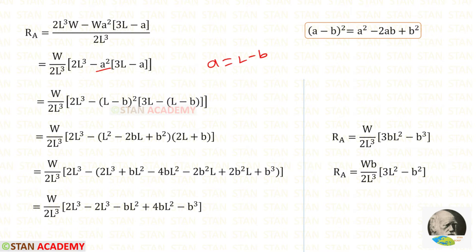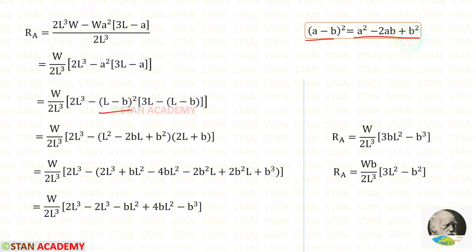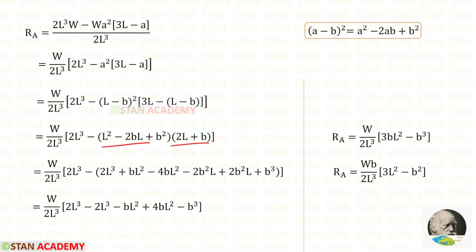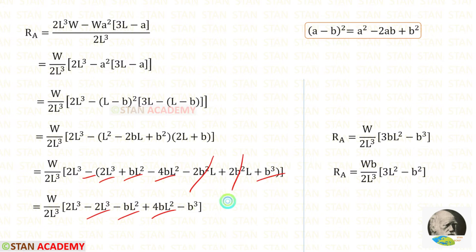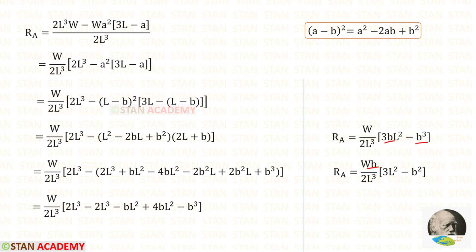For A², we apply (L − B)², and for A we apply L − B. Using the formula (A − B)² = A² − 2AB + B², where here A is L and B is B, we expand and multiply the terms. We can eliminate common terms, take the negative sign inside the bracket, and then eliminate 2L³. Combining: −BL² + 4BL² gives 3BL². Taking B outside, we finally obtain the expression for RA.